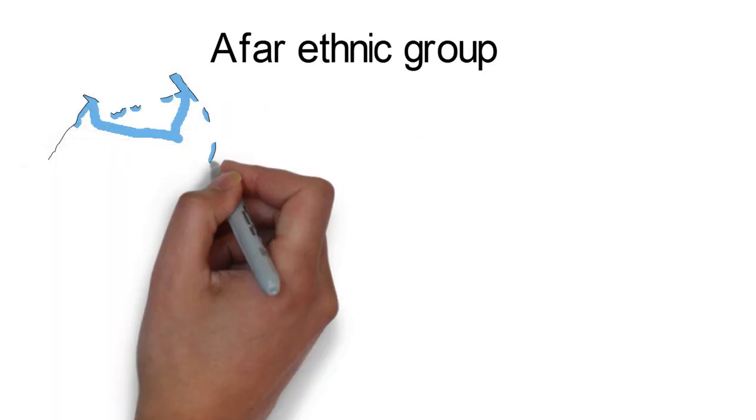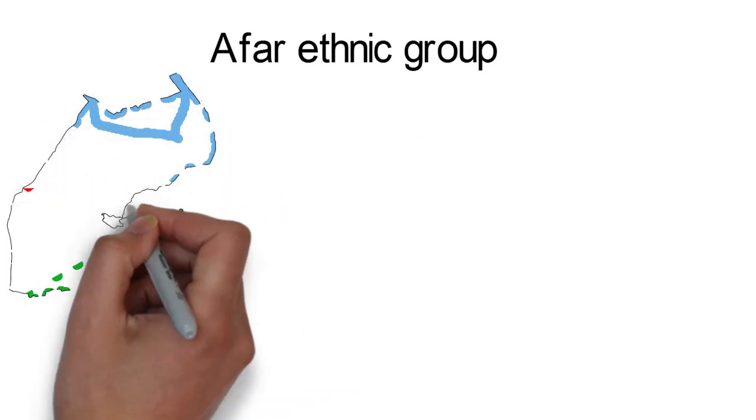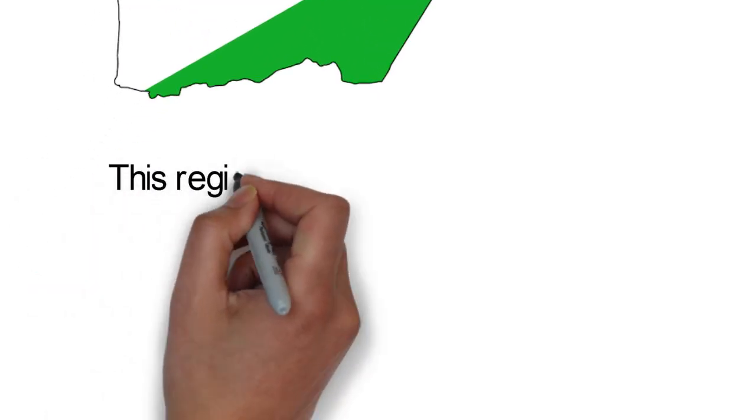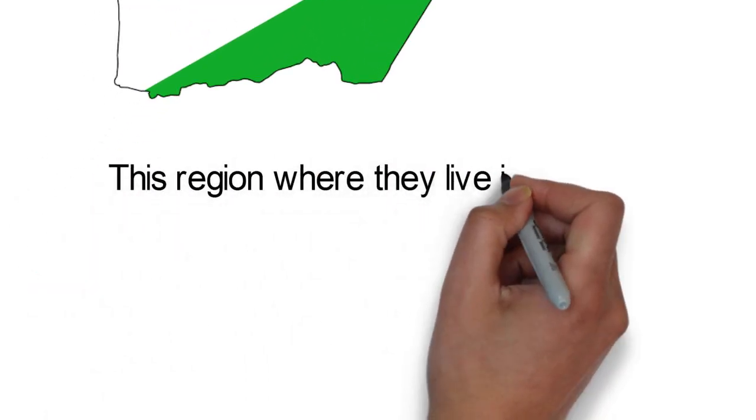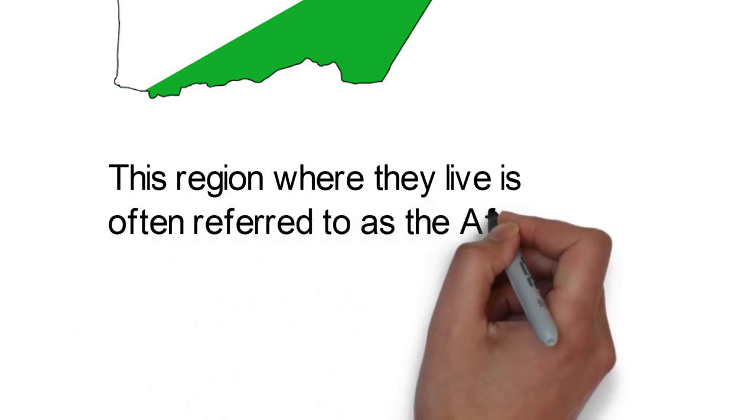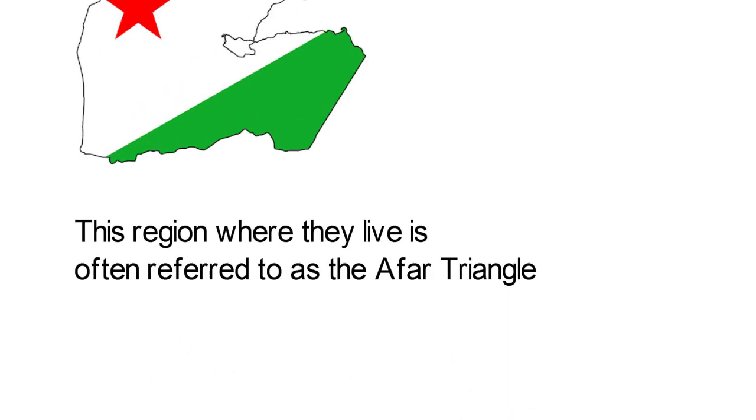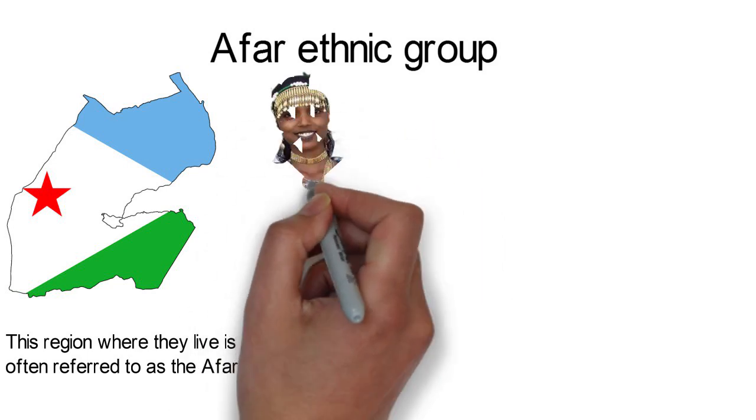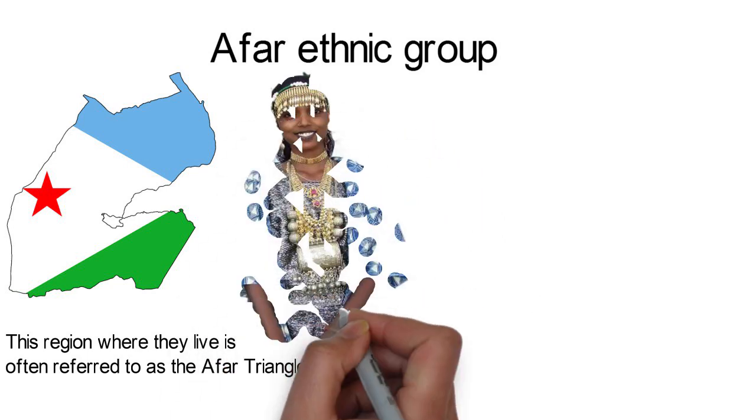Afar ethnic group. The second largest ethnic group in Djibouti is the Afar, comprising 35% of the population. They mostly live in the northern region of Djibouti. This region where they live is often referred to as the Afar triangle. It is arguably the hottest and driest spot on earth.